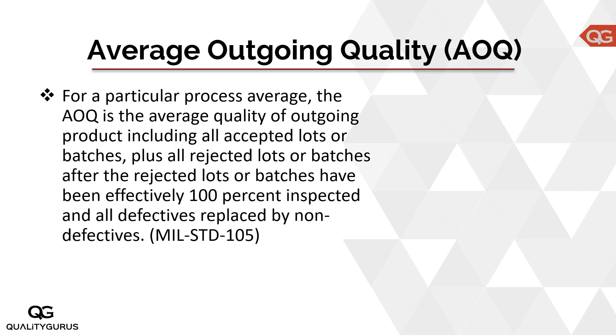For example, say you received 1000 items and found 50 defectives. You remove those 50 defectives, put 50 new pieces in, and now you have a batch of 1000 pieces that are all good — even though this batch was originally rejected because of a high percentage of defectives. So acceptable lots go to the factory; rejectable lots go through screening, defective pieces are replaced with good pieces, and that good lot goes to the factory.